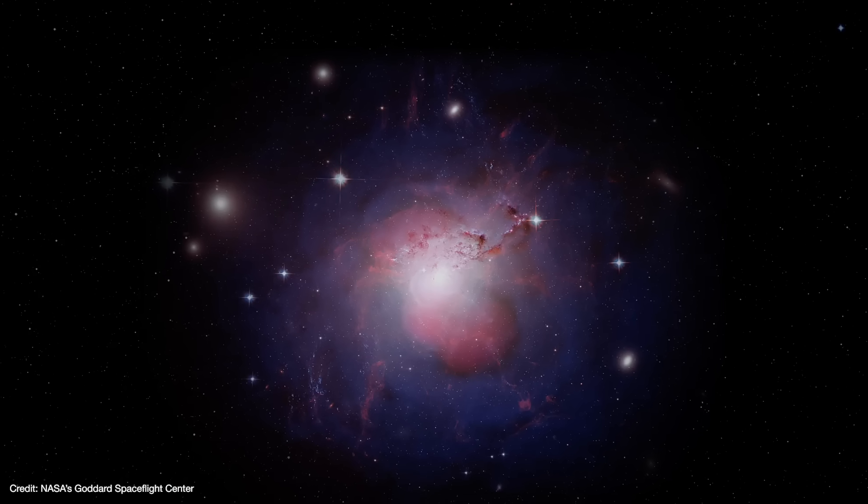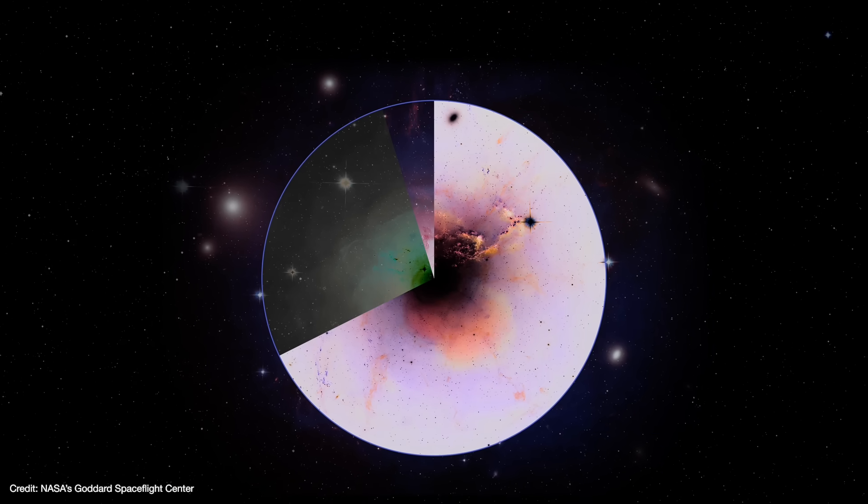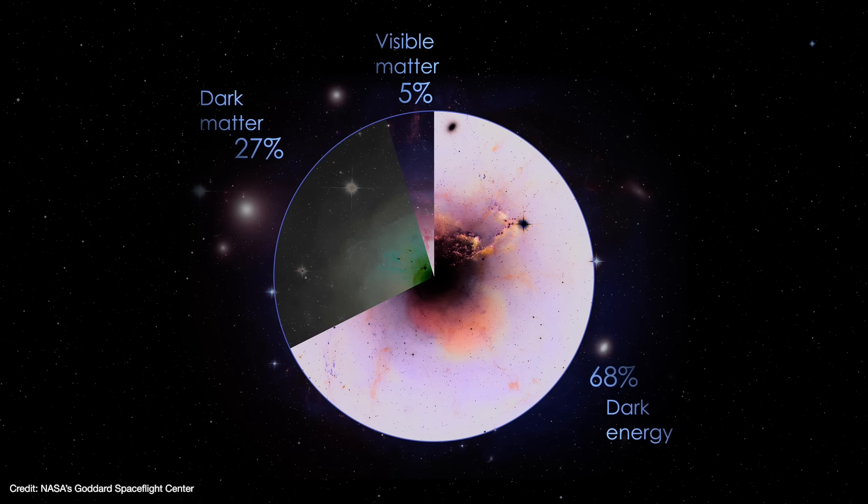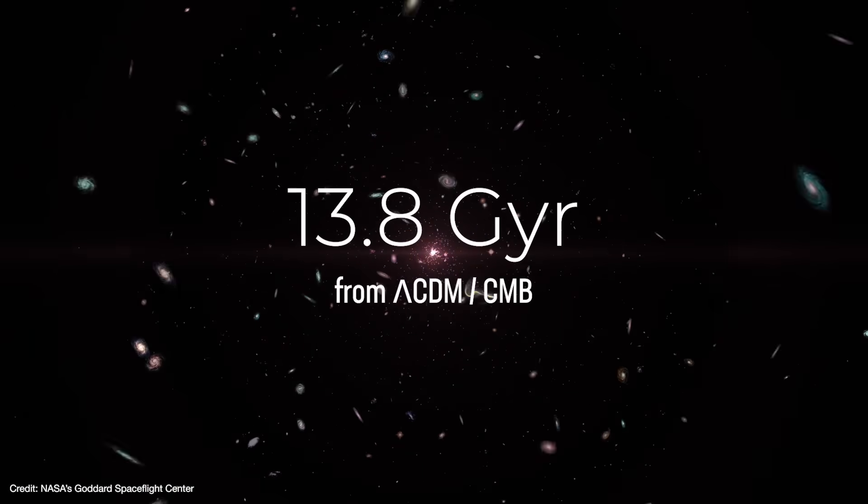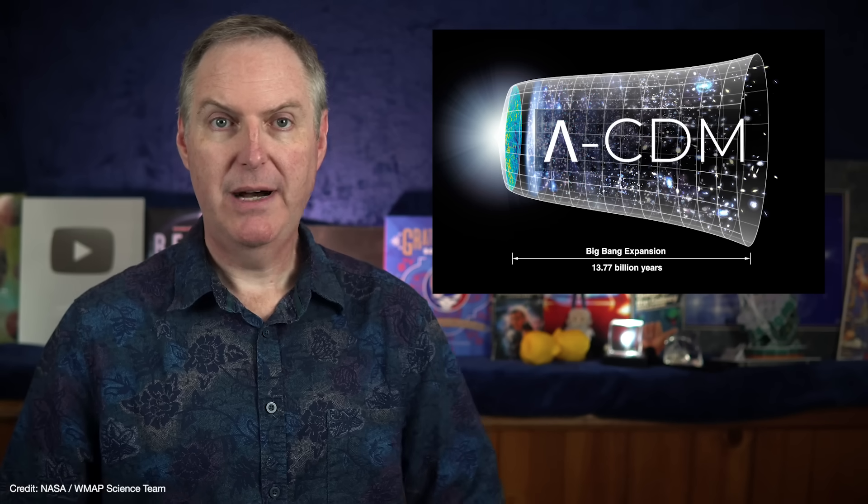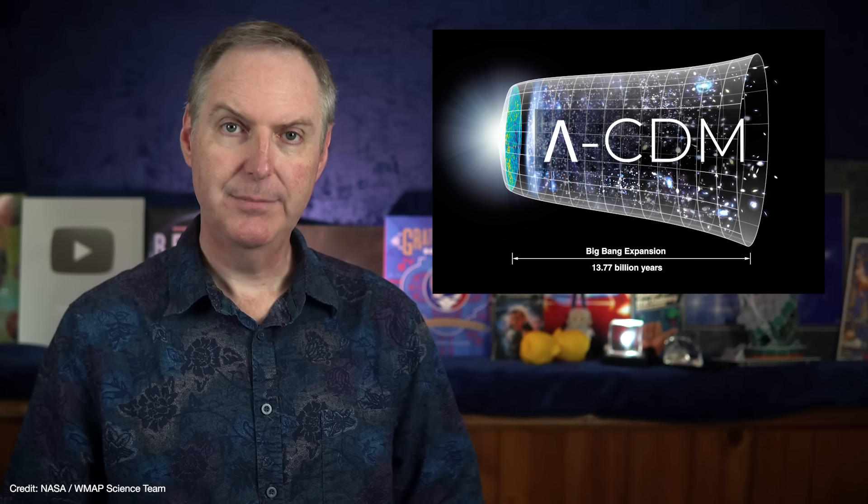and the large-scale structure we see today. Lambda CDM tells us the universe is made of 5% normal matter that makes up the stuff we see, 27% dark matter, and 68% dark energy. It also tells us that the universe is 13.8 billion years old. It's a good model. In fact, it's our best model. But we also know it's incomplete.